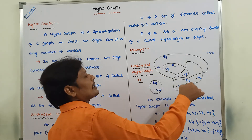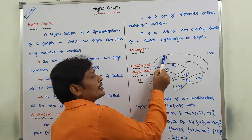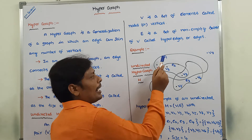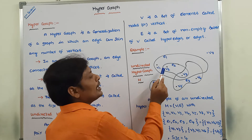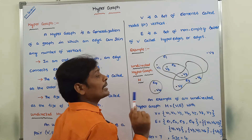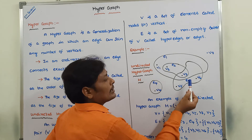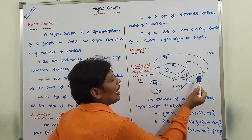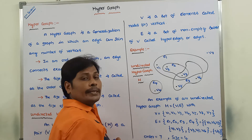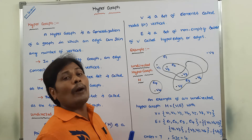Now we can see this example. Edge E1 can join three vertices: V1, V2, and V3. Edge E2 can connect two vertices: V2 and V3. Edge E3 connects vertices V3, V5, and V6. Edge E4 connects only one vertex, V4. So an edge can connect any number of vertices — that is called a hypergraph.